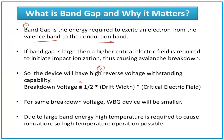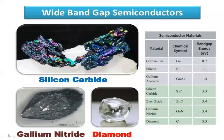For the same breakdown voltage, the WBG device size will be small. So for the same voltage, the size of a wide band gap device is very small compared to a normal silicon semiconductor. Due to the large band energy, a high temperature is required to force ionization, so high temperature operation is possible. Silicon carbide has a band gap of 3.3 eV, gallium nitride is 3.4 eV, and diamond is 5.5 eV, whereas silicon is 1.1 eV and germanium is 0.7 eV.